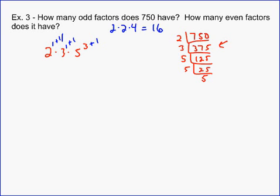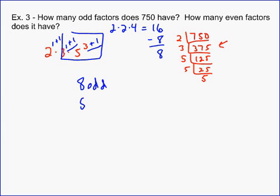If you want to know how many odd factors it has, you just look at the odd numbers. The number of odd factors is going to be 2 times 4, which is 8. So if there are 8 odd factors, then that means there must be 16 minus 8, which is also 8. And so there are 8 even factors.